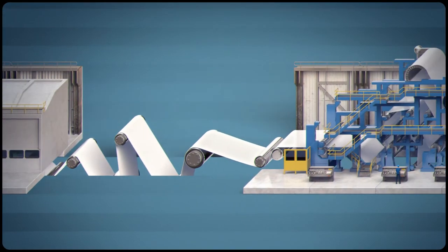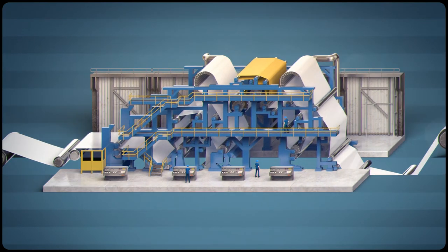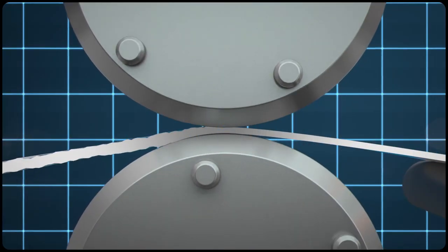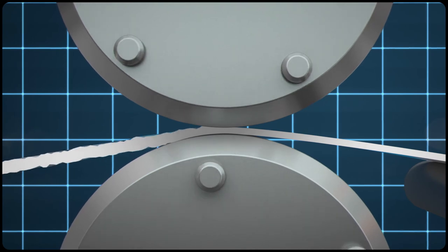The paperboard's then pressed between steel rolls to further even out the surface and increase smoothness. This also controls the board's thickness and density.